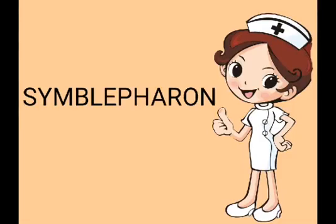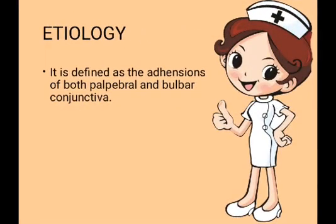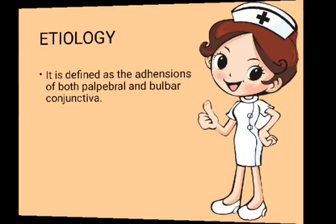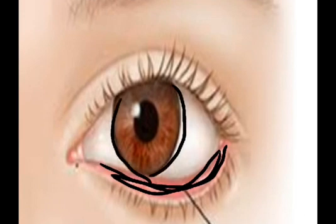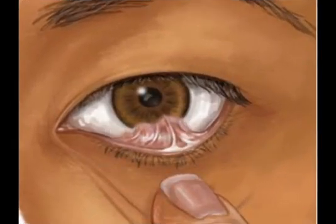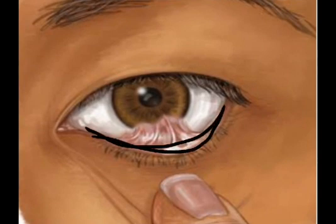Today I am going to give you an explanation about the topic symblepharon. It is defined as the adhesion of both the palpebral and the bulbar conjunctiva — the word adhesion means sticking. The pinkish part visible here is the palpebral conjunctiva, and the bulbar conjunctiva is present at the junction of the cornea and sclera, almost at the limbus part. So sticking takes place between the palpebral and the bulbar conjunctiva.